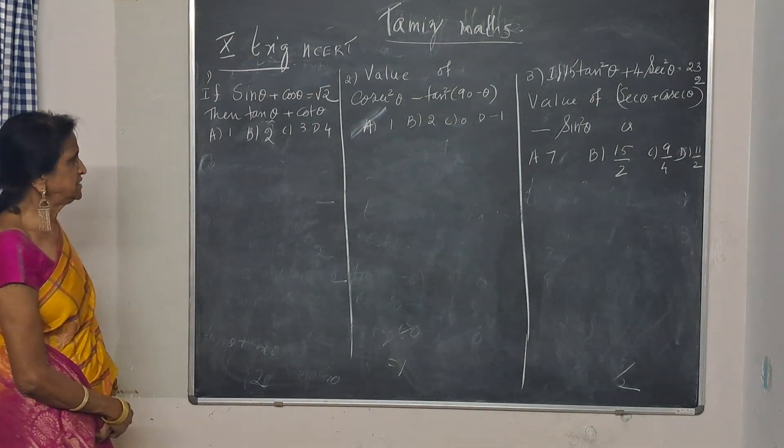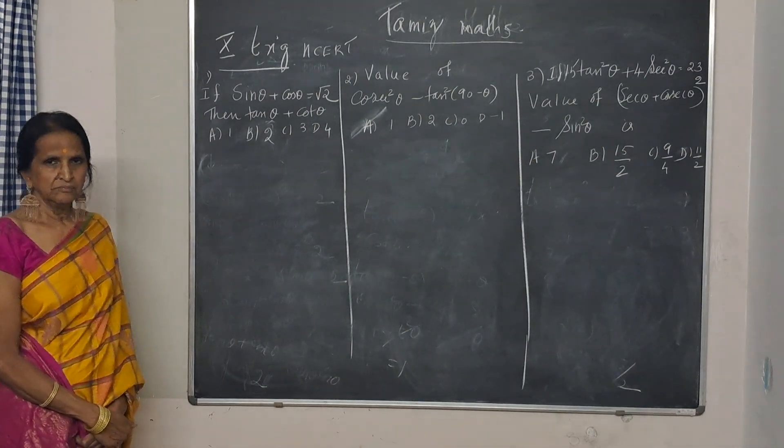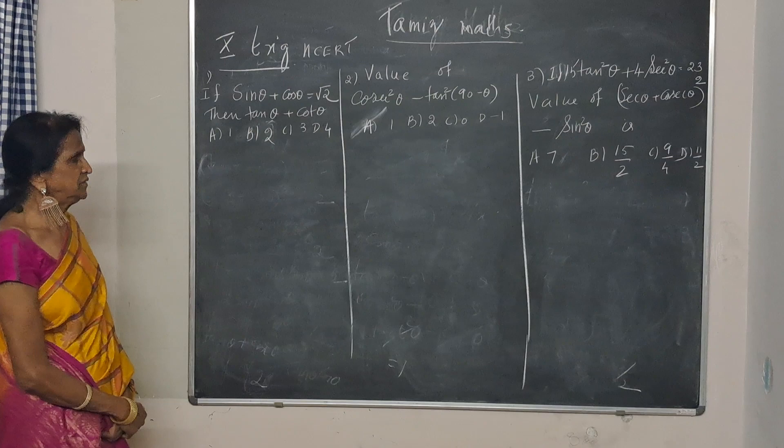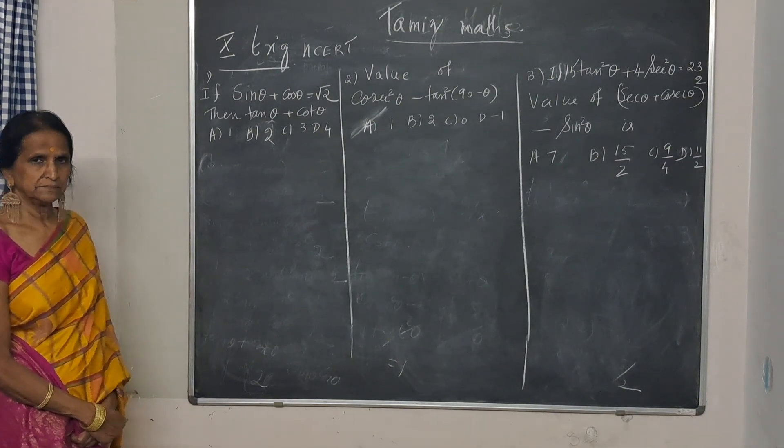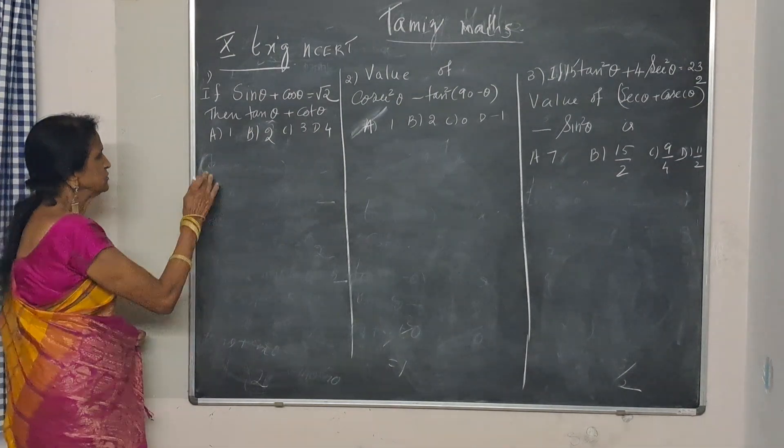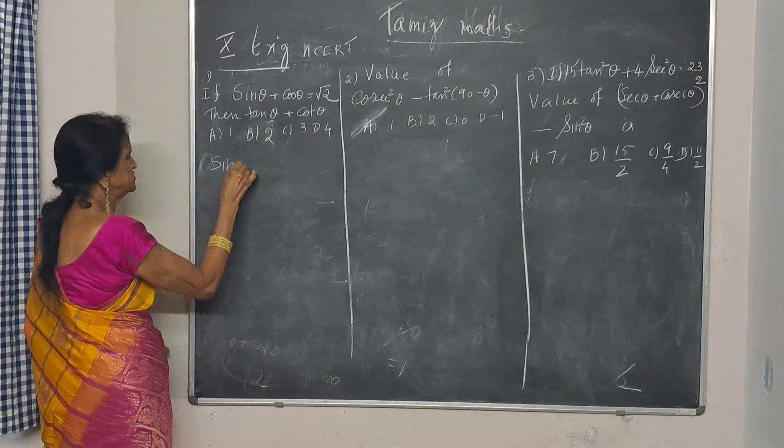If sin theta plus cos theta is root 2, then what is going to be the value of tan theta plus cot theta? Now, sin theta plus cos theta is root 2.